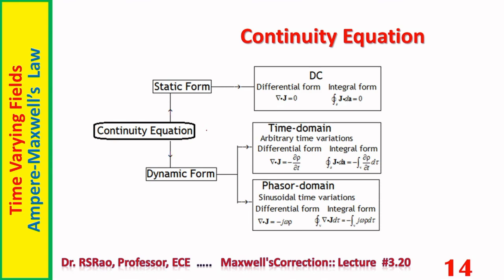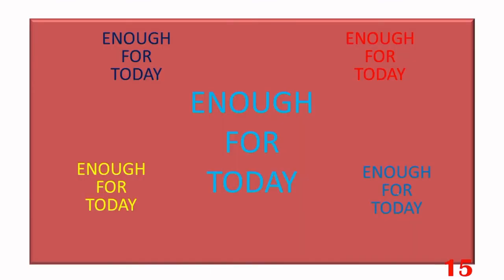All forms of the continuity equation are shown in a diagram. The static form has: differential form div J = 0, and integral form ∮J·dS = 0. The dynamic form exists in time domain and phasor domain. In time domain: differential form is div J = −∂ρ/∂t, and integral form is ∮J·dS = −∫∂ρ/∂t dτ. In phasor domain: differential form is div J = −jωρ, and integral form is ∮J·dτ = −∫jωρ. In the present session we have gained a fairly good understanding of Ampere-Maxwell's Law as well as the continuity equation.